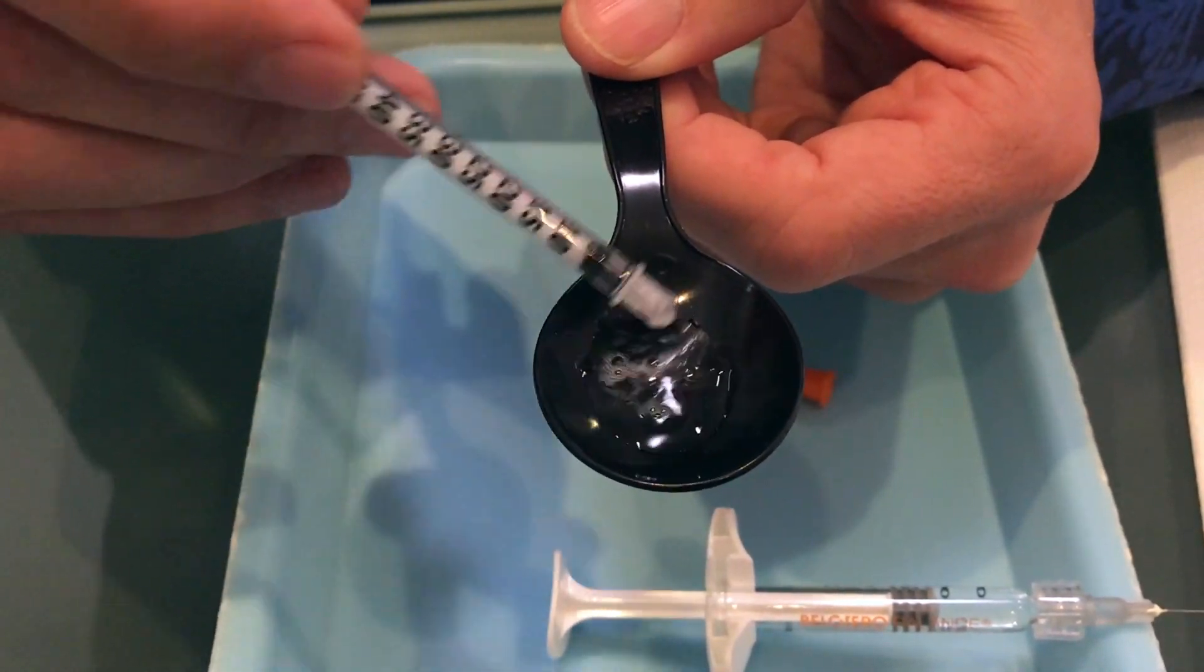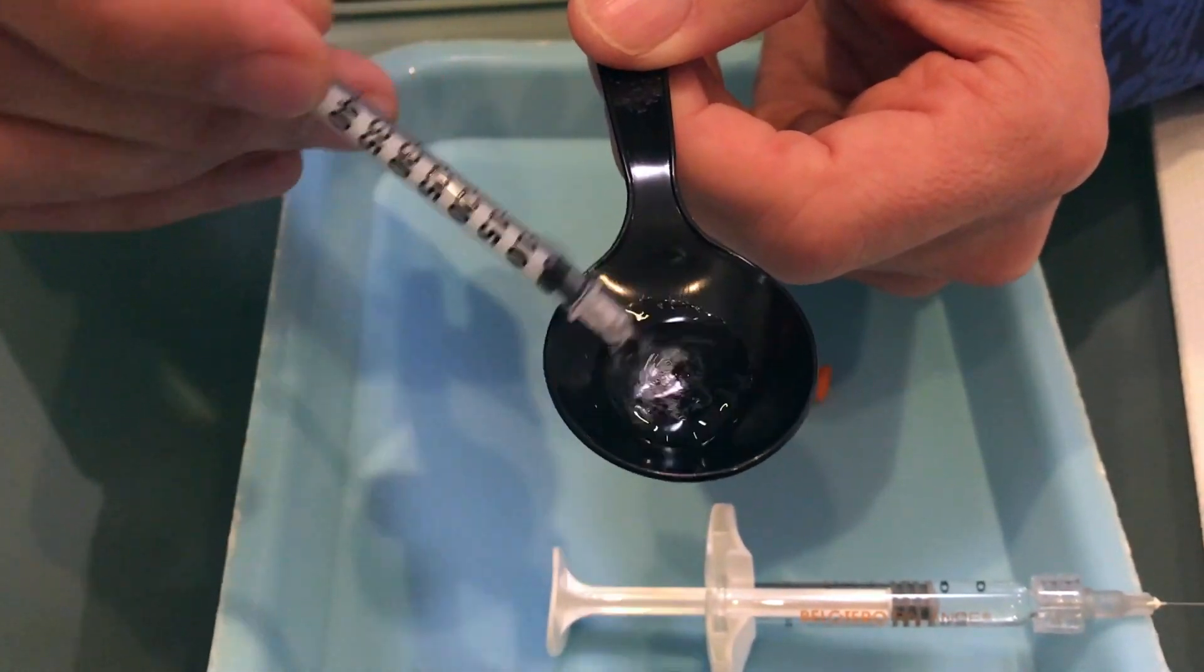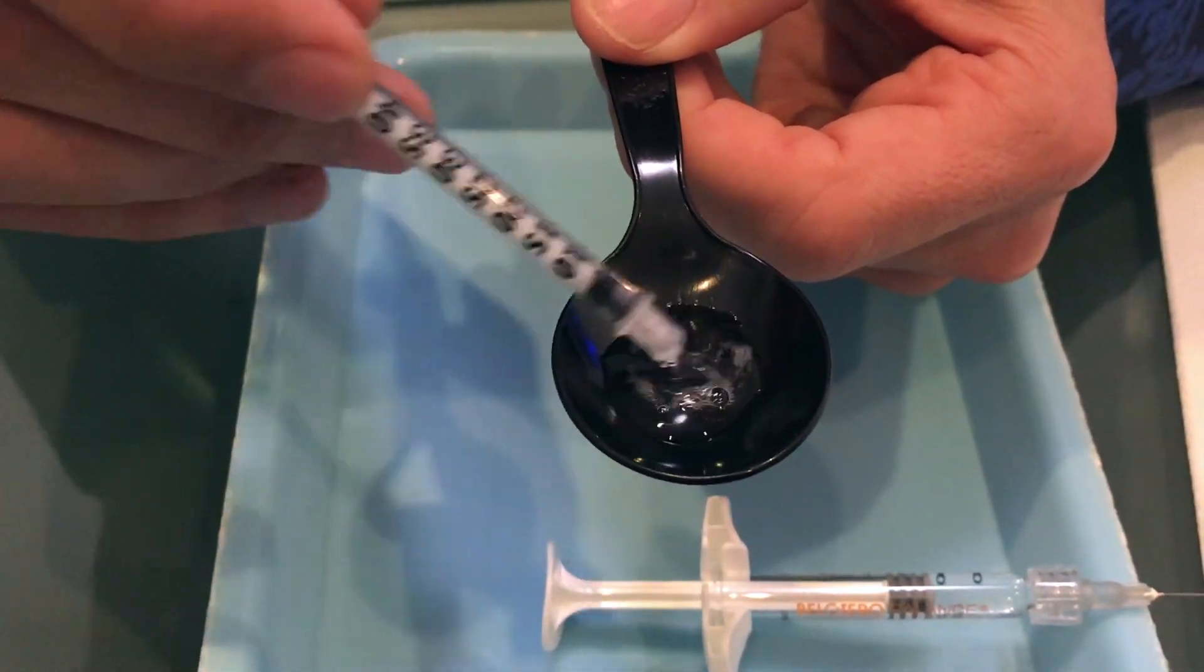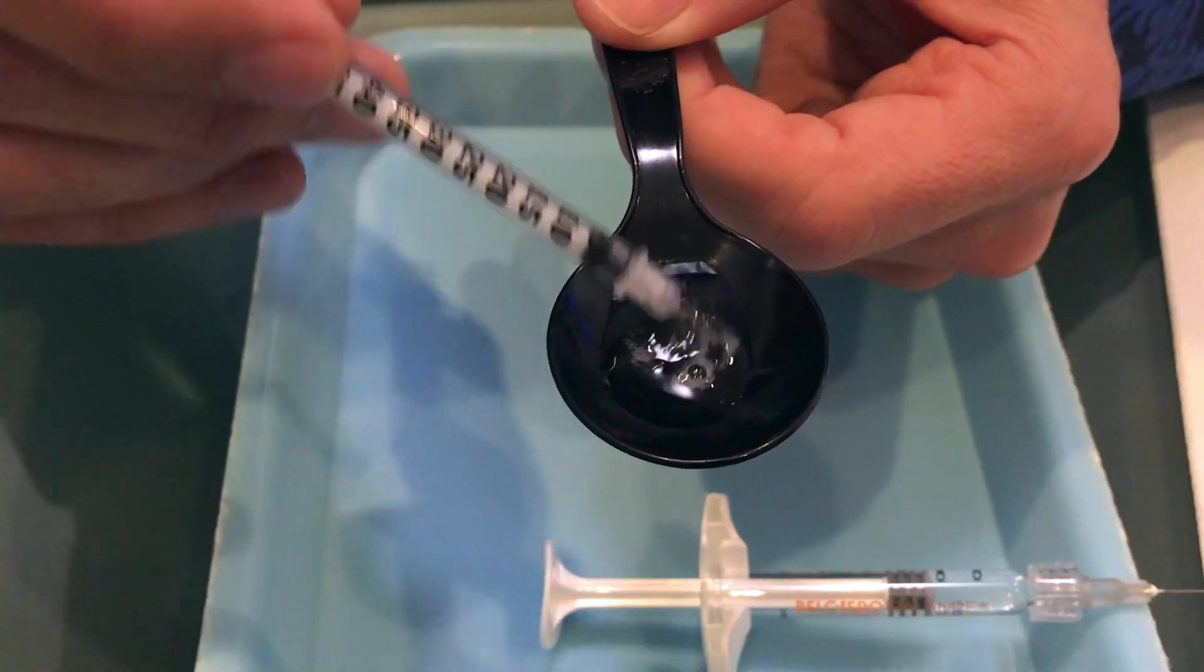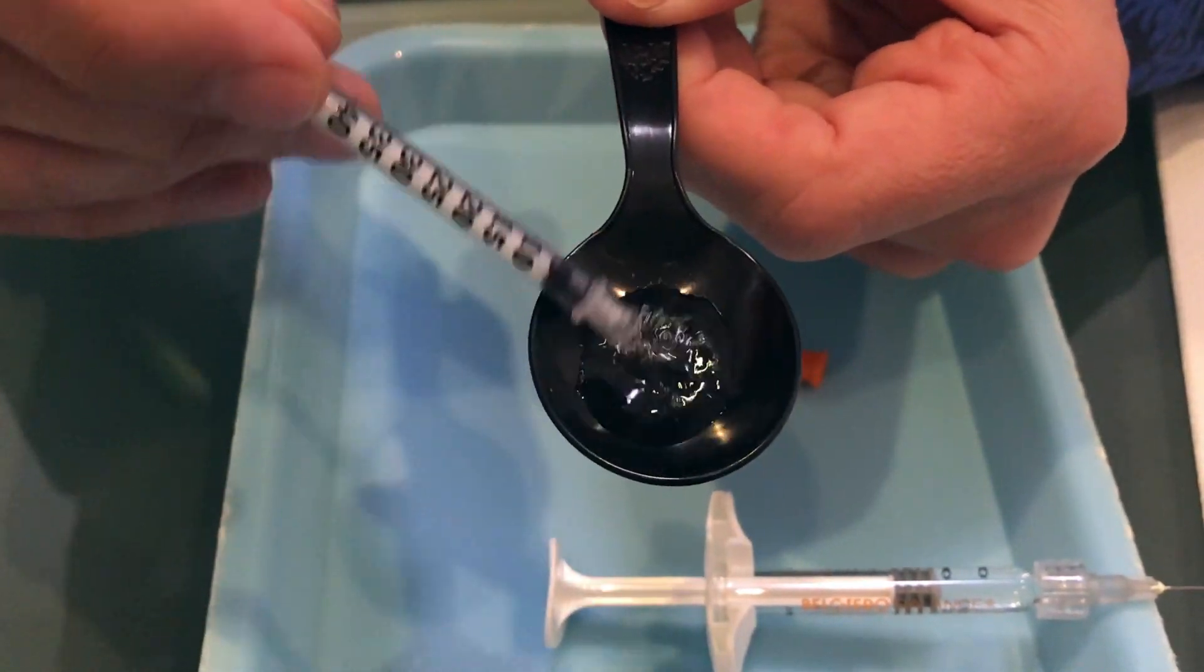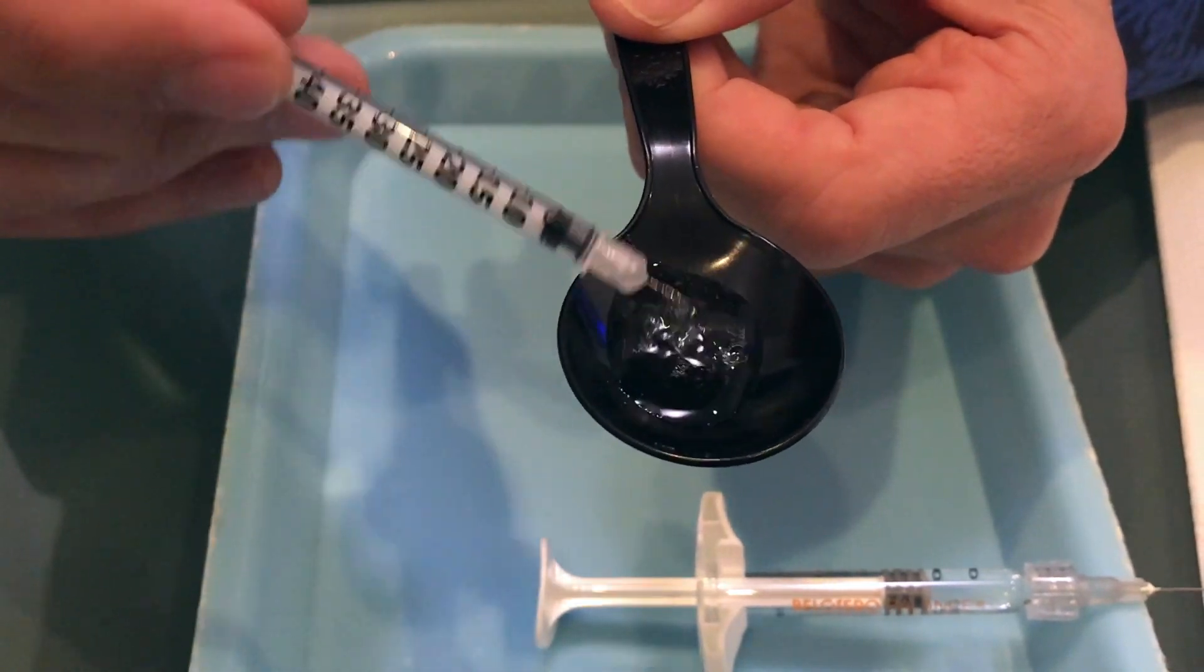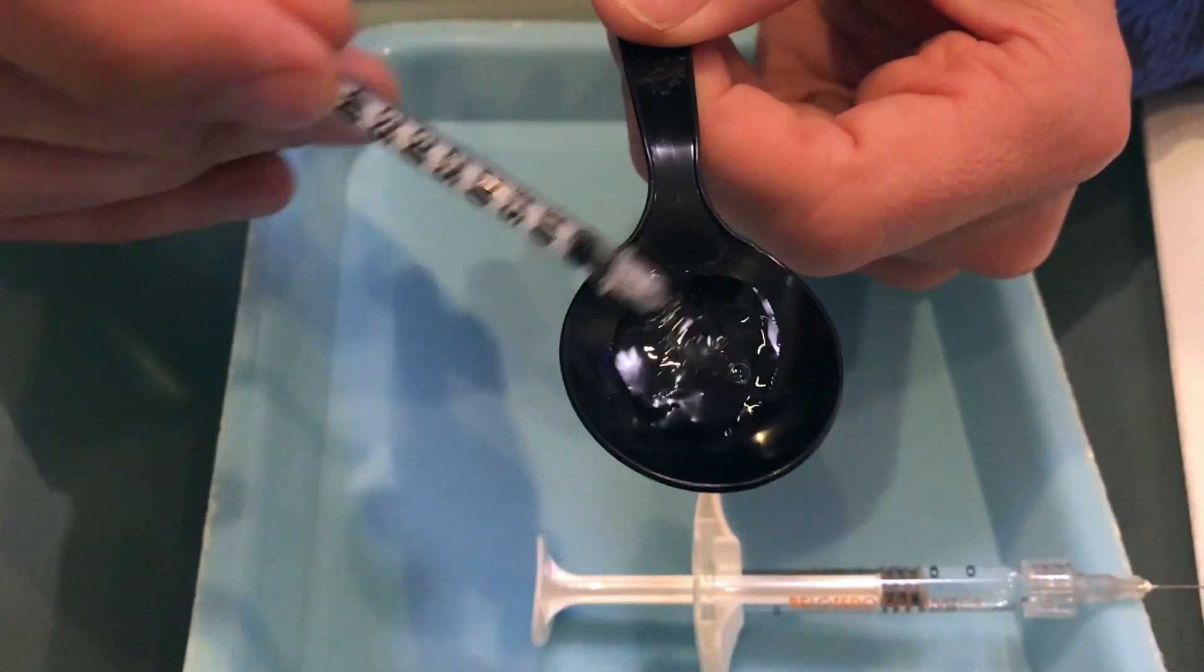So what happens when you do the Hylinex with Hyaluronidase is it liquefies it and then the body just takes it away. And it seems like that additional Hyaluronidase has dissolved just about all of the Bellatero.